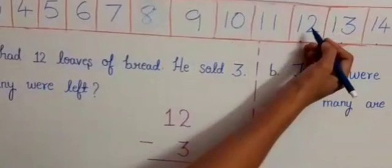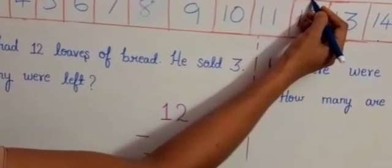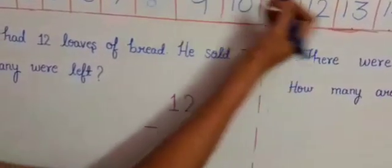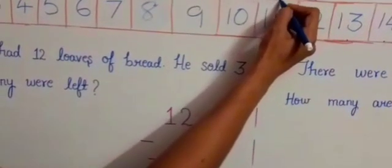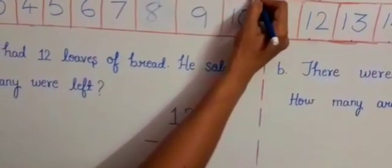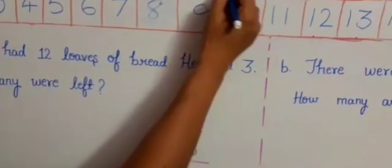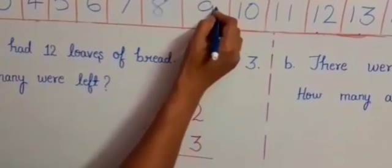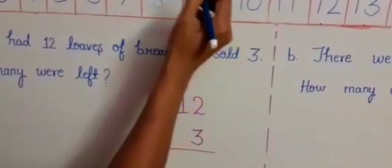So start from 12. Three steps go backward. 12 to 11, 1. 11 to 10, 2. 10 to 9, 3. So we will reach at 9.